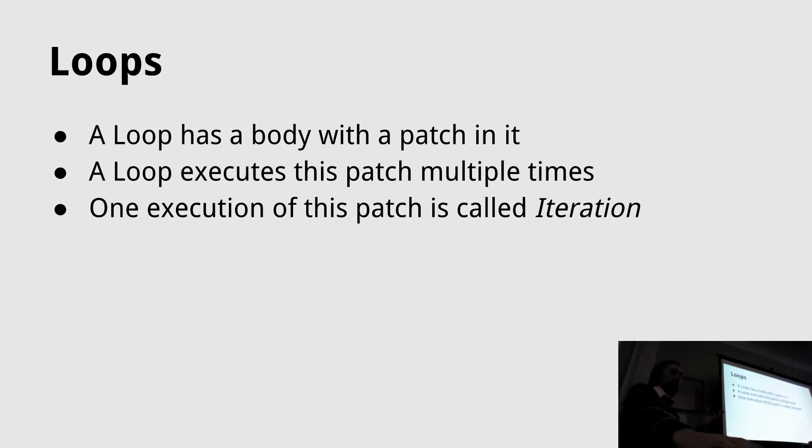VL has two kinds of loops. First of all, a loop is a construct that executes its content multiple times, and each execution is called one iteration of the loop.